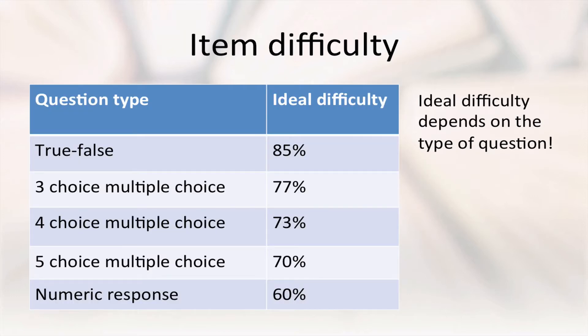From this, we can calculate an ideal difficulty for any type of question. Here I've calculated ideal difficulties for some common question types. An assessment built entirely from four-choice, multiple-choice questions, for example, should have an average near 73%. Much lower or higher, and students and teachers are getting less meaningful feedback from the assessment than they otherwise could.